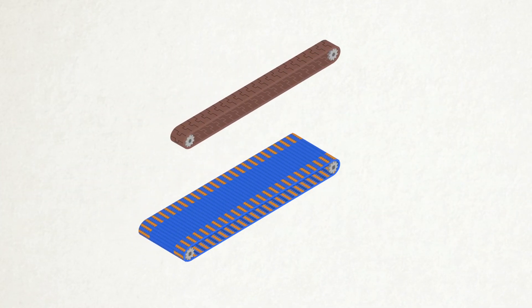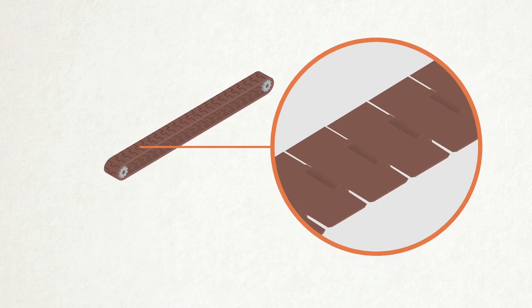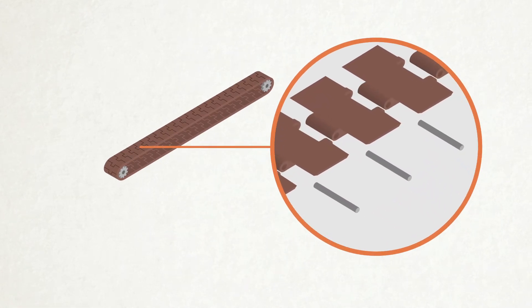A plastic modular belt or chain consists of links and pins, constructed to a specific length and width.